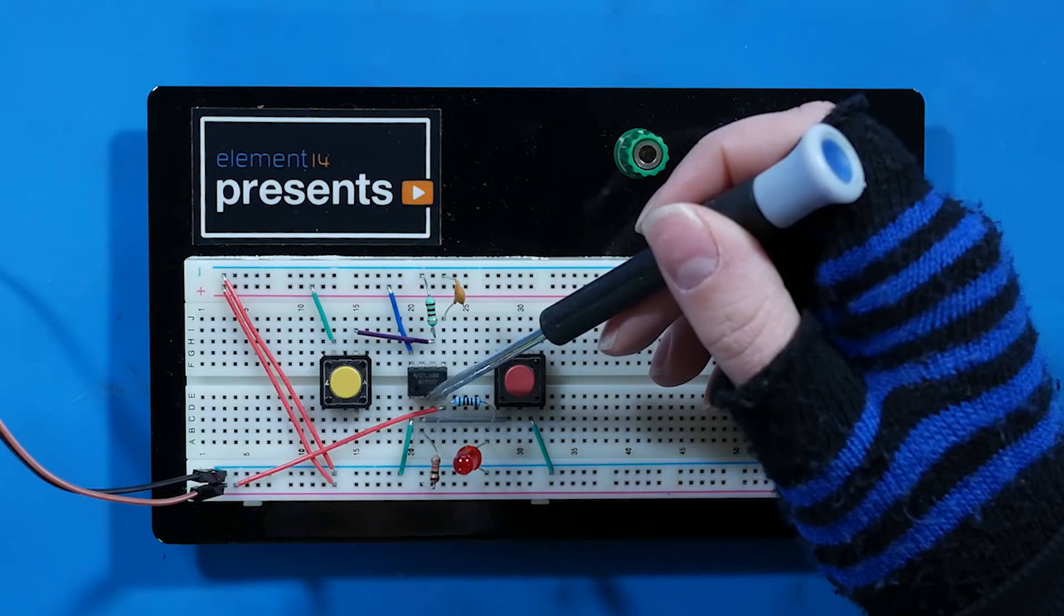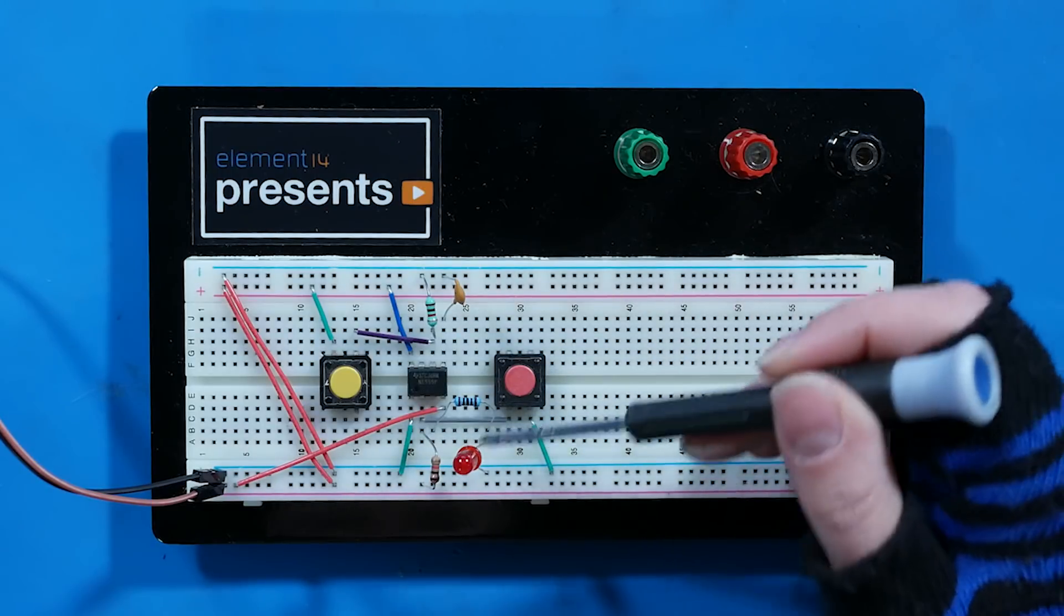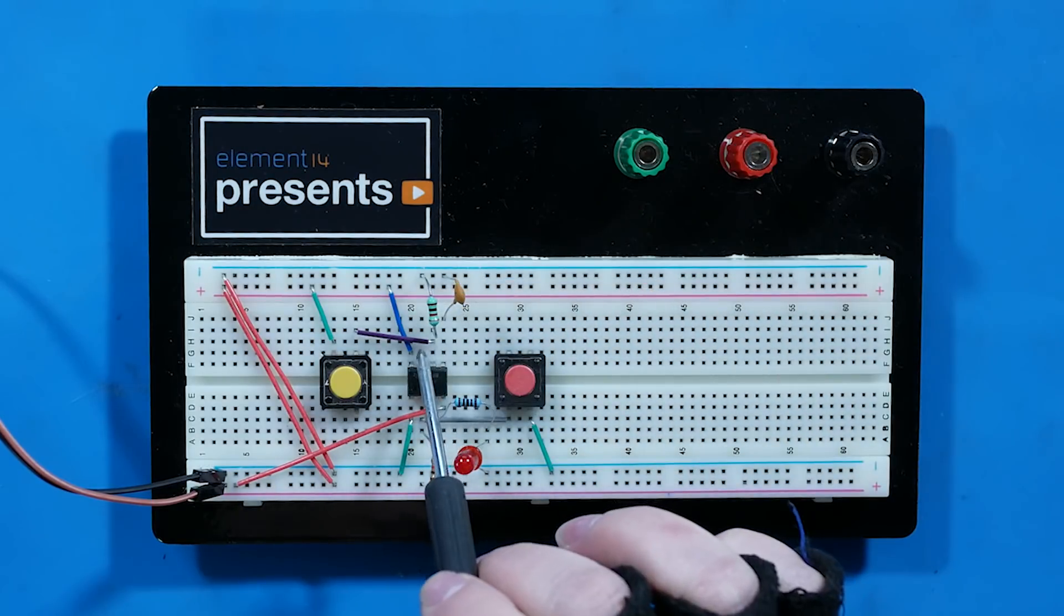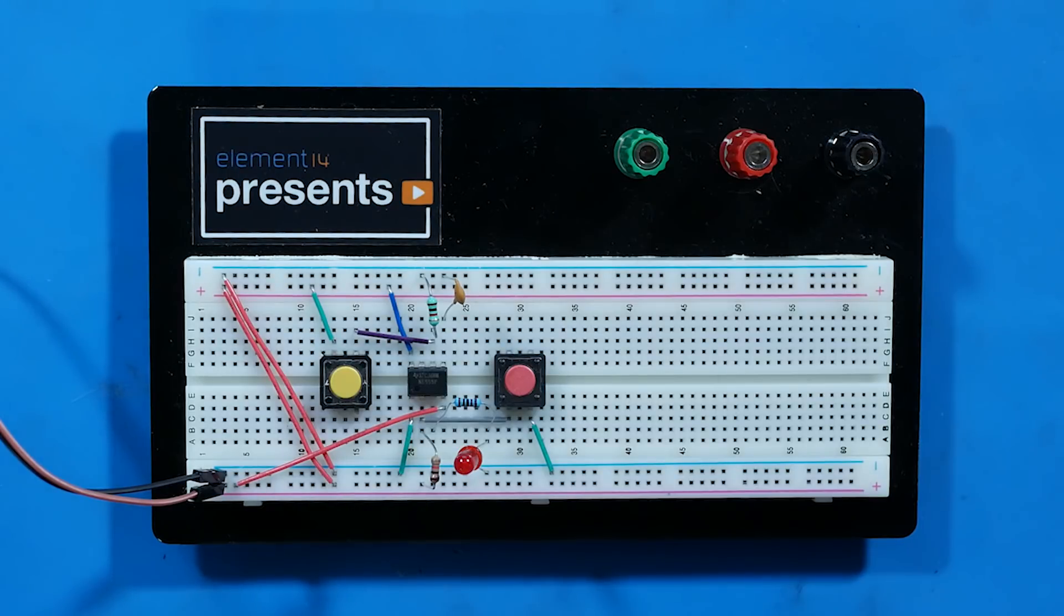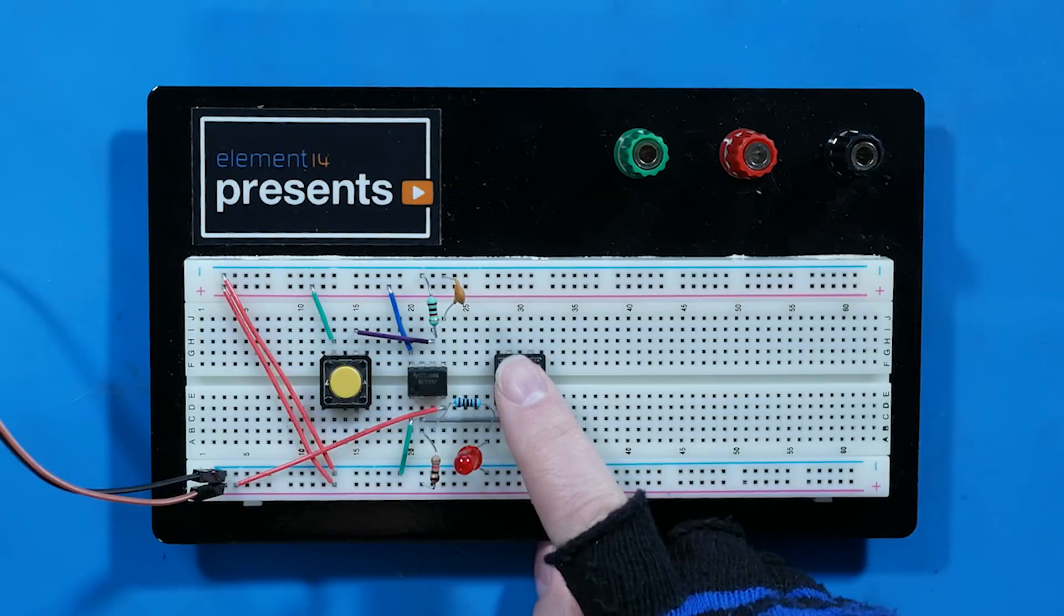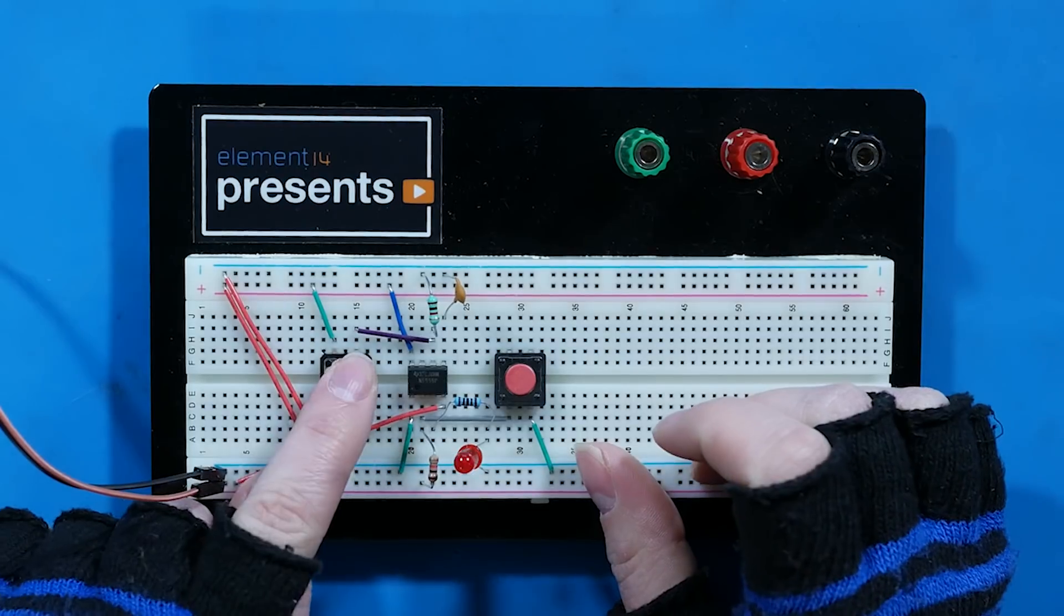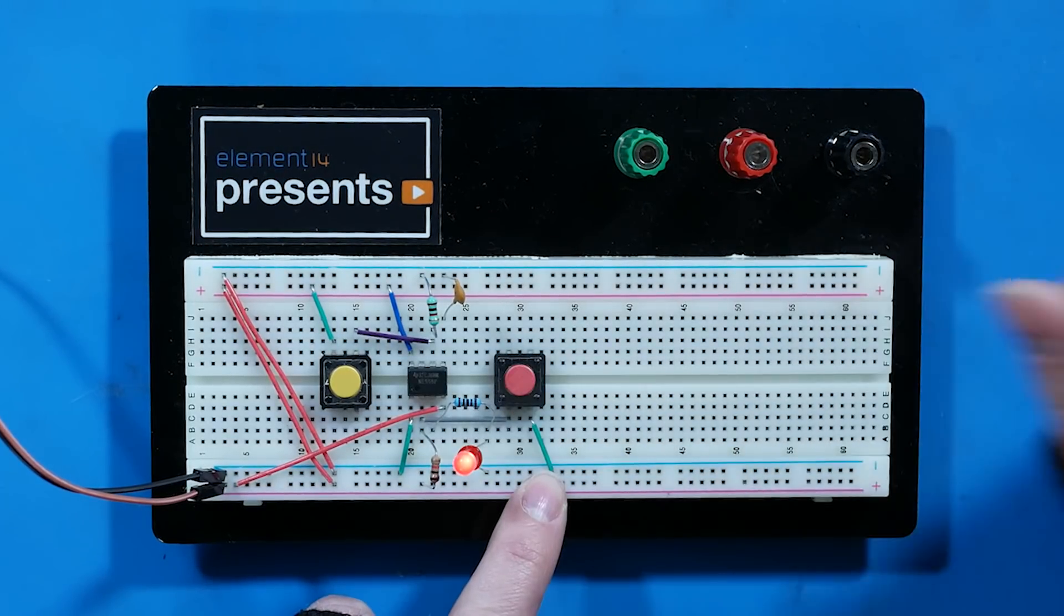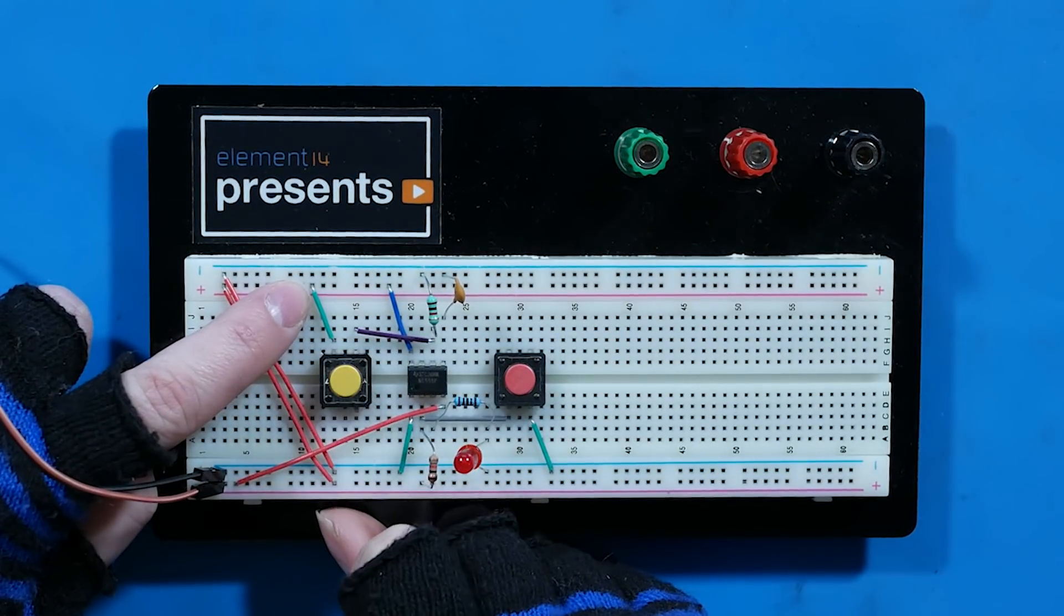Pin 2, trigger, is connected to VCC through a resistor. Then also connected to ground through this button. Pin 6, threshold, is connected to ground through a resistor. Then also connected to VCC through this button. The connections through the resistors keep both internal comparators held low, effectively off. When the first button is pressed, comparator 1 is set high and the 555 outputs high. When button 2 is pressed, the output of comparator 2 is set high, which resets the 555 output back to low. Connecting trigger to ground makes the 555 output high. Connecting threshold to VCC makes the 555 output low.